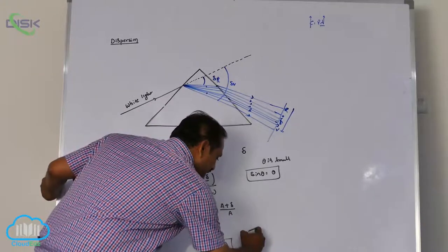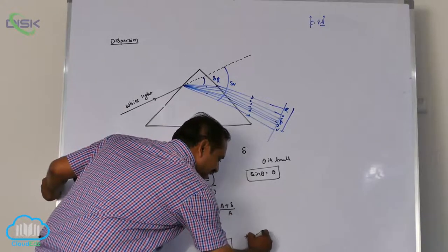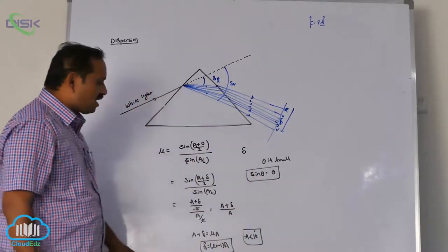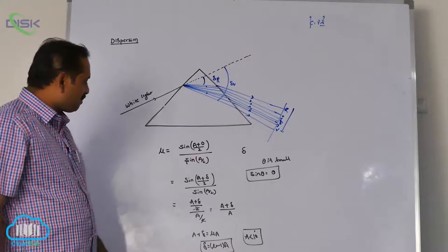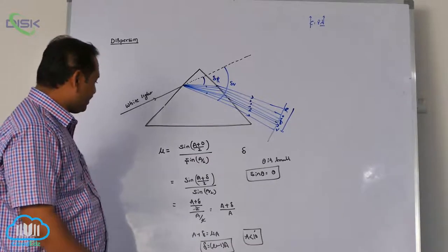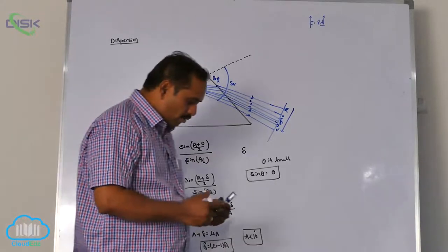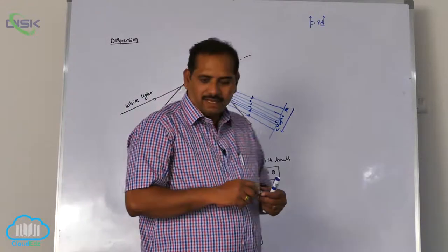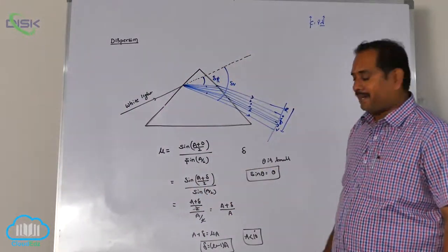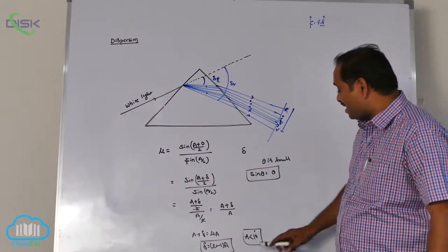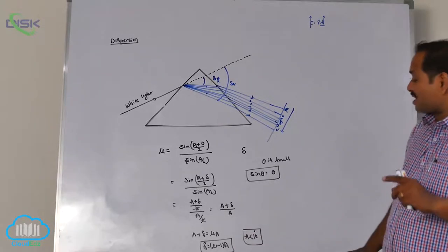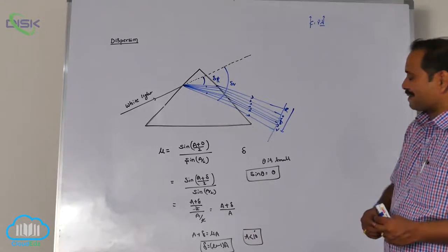The angle A should be less than 10 degrees for the small-angled prism condition. The deviation formula is δ = (μ−1)A, applicable at minimum deviation for a small-angled prism.